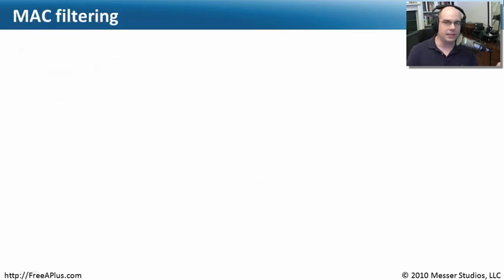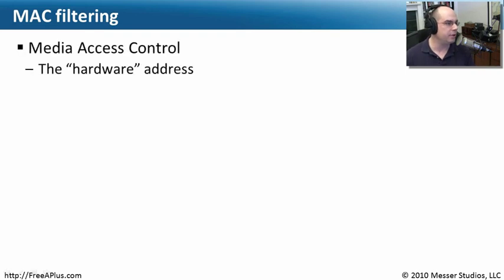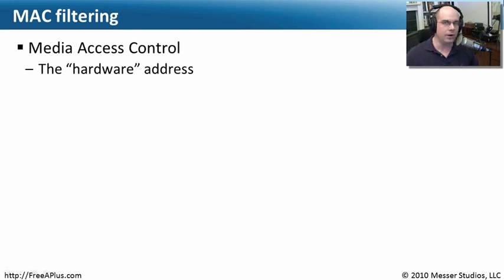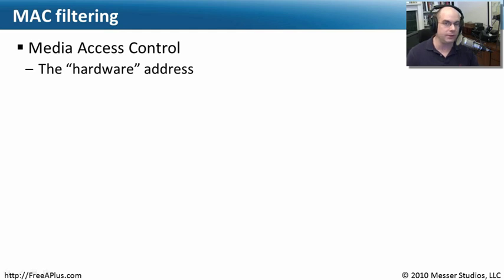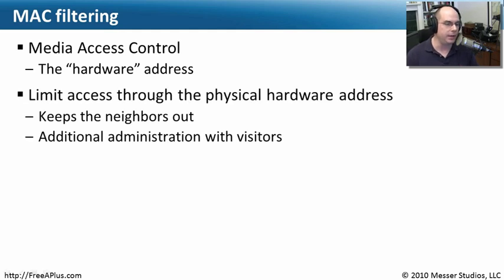A way to implement more access control on a wireless access point is through something called MAC filtering. MAC stands for Media Access Control and is the hardware address of your wireless Ethernet cards. Every network card on any network has a MAC address — a hardware address associated with it. At a very fundamental level, this is how networks communicate with each other: over that physical hardware address.